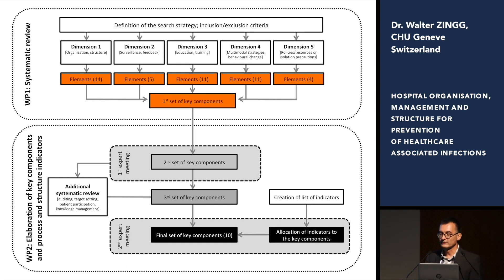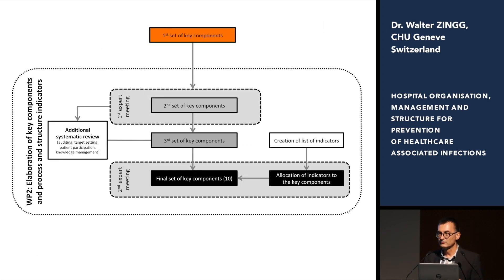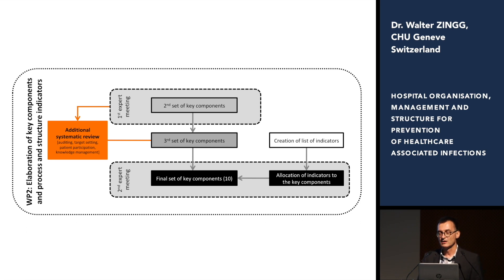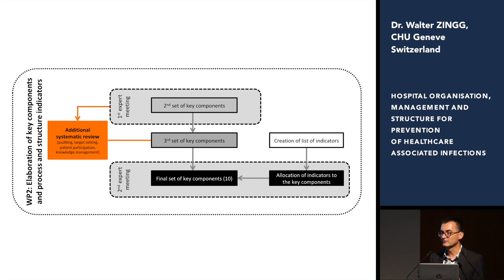Once we had the first set of elements, we invited the experts and they had to comment on those — whether we did a good job with the systematic review or left something out. Astonishingly, although we used a very broad search term, we did not find papers on auditing, on target setting, on patient participation, and knowledge management — at least not with sufficient quality. So we went back and adjusted the search terms again to look specifically for those questions.